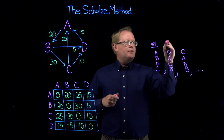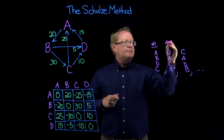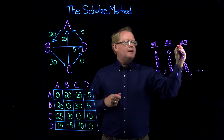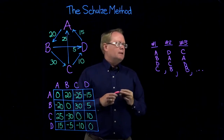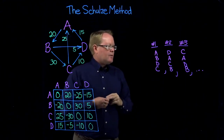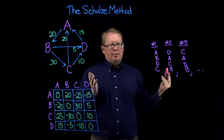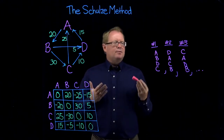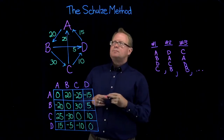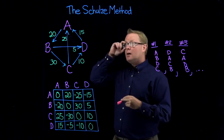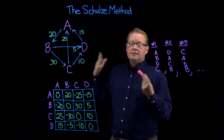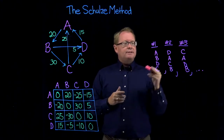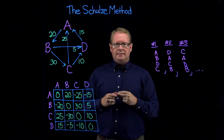Maybe voter number two has a different set of preferences, and voter number three has yet another set of preferences, and so on. The question is, when you have a preferential ballot election and all this data, how do you determine the winner of that election? Well, some first ideas that occur to you: you could just see who gets the most first choice votes.